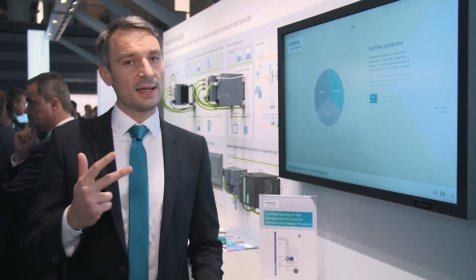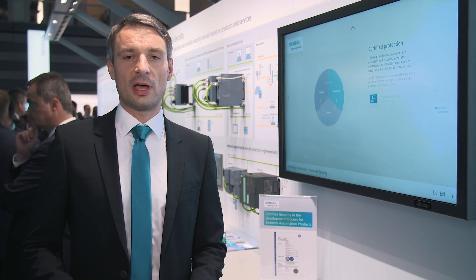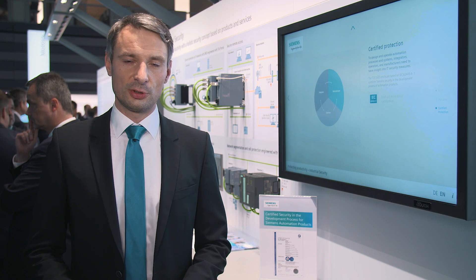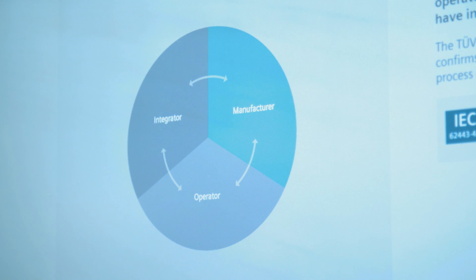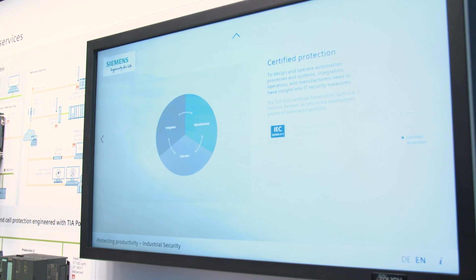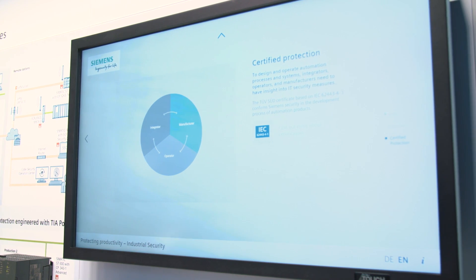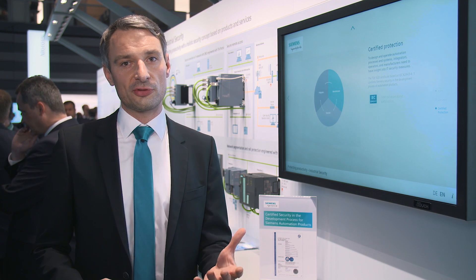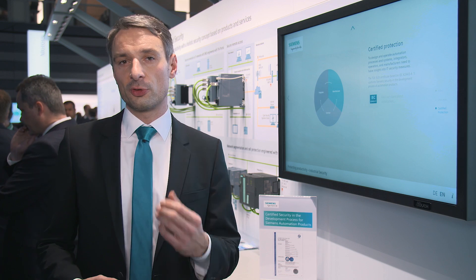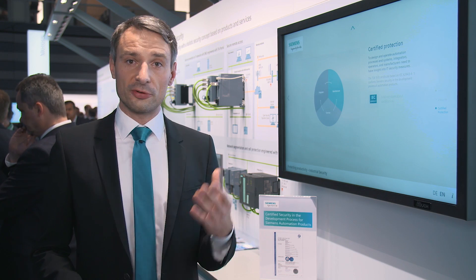But what is necessary to implement industrial security at your company? Three elements are decisive to implement industrial security. On the one hand, manufacturers of automation solutions have to provide integrators and operators of automation plants with products that have been system-tested for security.